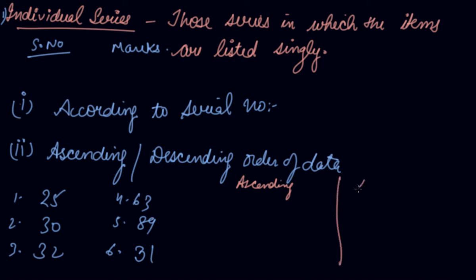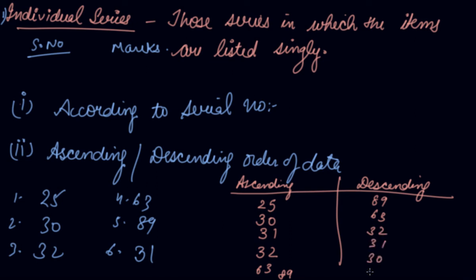In ascending order, from small to bigger: 25, then 30, then 31, then 32, then 63, and then 89. In descending order: 89, 63, 32, 31, 30, and